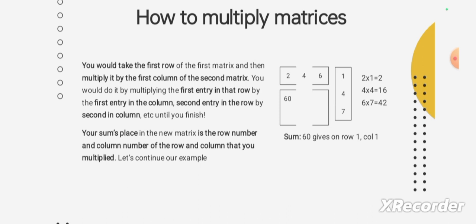Now let us see how to multiply. For the first row, first column: we take the first row and first column elements. You would take the first row of the first matrix and multiply it by the first column of the second matrix. You do it by multiplying the first entry in that row by the first entry in the column, the second entry in the row by the second in the column, and so on until you finish. Your sum's place in the new matrix is the row number and column number of the row and column that you multiplied.